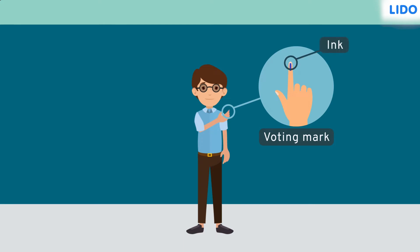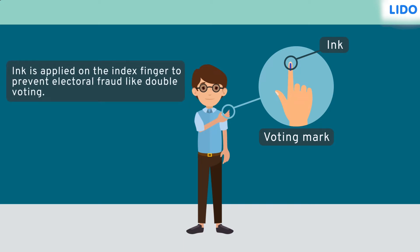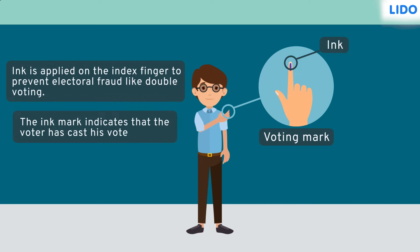Do you know why ink or dye is applied on the index finger of the voter after voting? Well, this semi-permanent ink is applied on the index finger during the elections to prevent electoral fraud like double voting. So, the ink mark on Akshay's finger indicates that he has cast his vote on the election day.